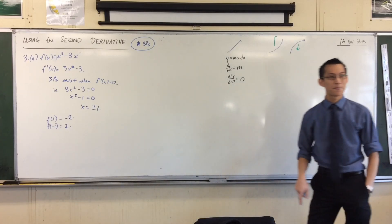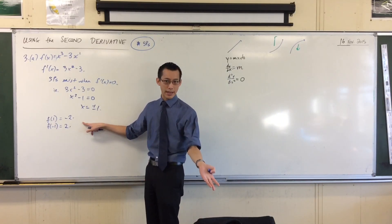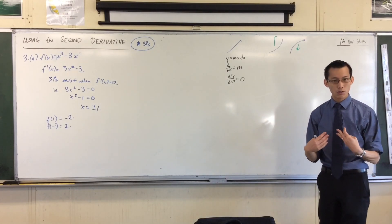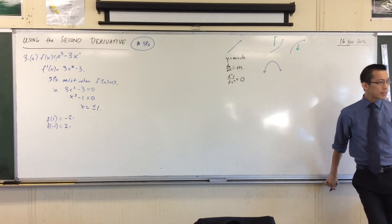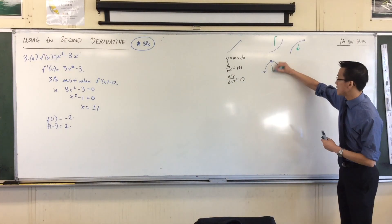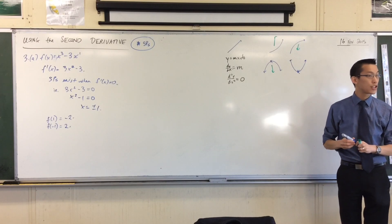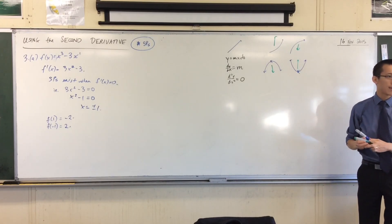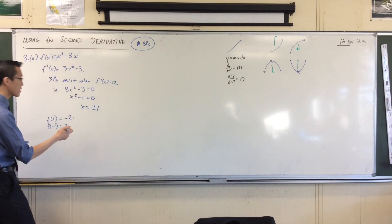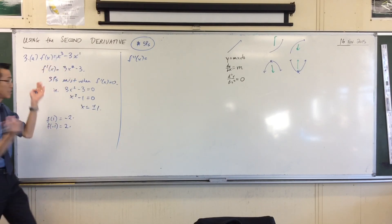Now I want to determine the nature of these stationary points using the second derivative. Remember the picture: concave up, concave down. If I have a local maximum, the concavity at that point will be concave down — so if the second derivative is negative, I conclude it's a maximum. In reverse, if I have a minimum, the point should be concave up, meaning the second derivative is positive. To do any of that, I need f''(x), which is 6x.